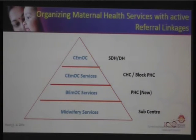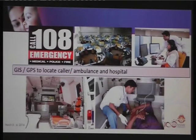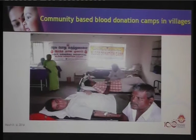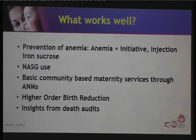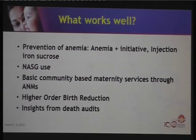Active referral linkages have also worked well — the 108 emergency service uses GPS to locate the caller, with an ambulance reaching within 20–25 minutes to transfer women to a higher-level facility. Community-based blood donation camps in villages are also being organized. Other effective interventions include prevention of anaemia through the Anaemia Plus initiative and injectable iron sucrose for women who do not take iron tablets, use of the NASG, community-based maternity services through ANMs, reduction of higher-order births, and insights from maternal death audits, which are now being implemented with operational guidelines across states.